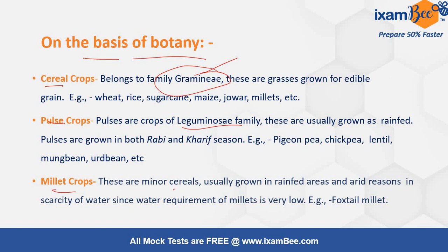Millets are generally minor cereals which are usually grown in rain-fed or arid regions because of water scarcity. As millets require less water, they are generally grown as an alternative to cereals in certain regions. Examples include foxtail millet, jowar, bajra, and pearl millet.